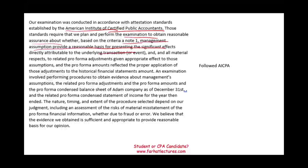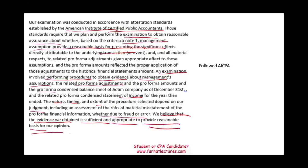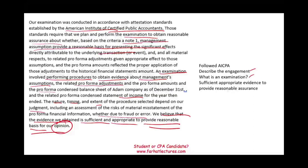We talk about the examination involving performing procedures to obtain evidence about management assumptions, the related pro forma adjustments, the pro forma amounts, and the pro forma condensed balance sheet of Adam Company and statement of income for the year ended. The nature, timing, and extent of the procedures depend on our judgment, including an assessment of the risk of material misstatement whether due to error or fraud. It sounds like an audit, except we cannot use the word 'audit' — we use the word 'examination.' We believe the evidence obtained is sufficient and appropriate to provide a reasonable basis for our opinion.